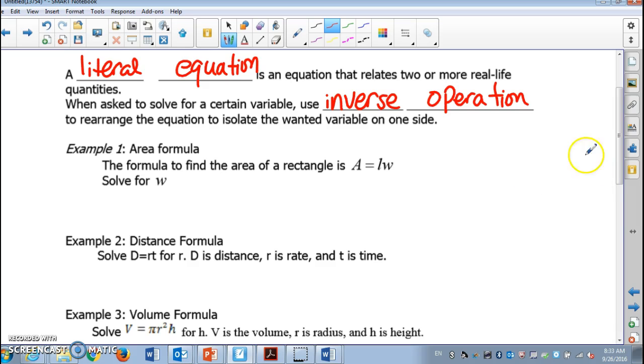Let's take a look at the first example. This is a formula for area: A equals L times W. It says solve for W. What does that mean? Solve for W means we are going to isolate W.